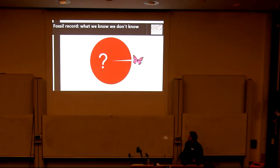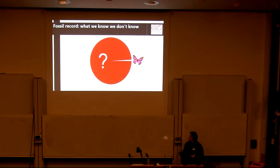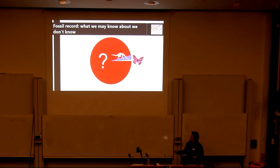On top of that, we also know that if we just look at extant species only, we're only getting a tiny snapshot of the diversity of life — perhaps only 1% of all species that have ever existed. And we can enrich this by incorporating the fossil record.